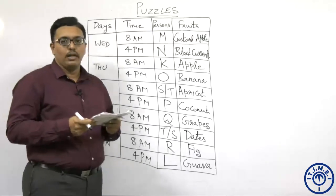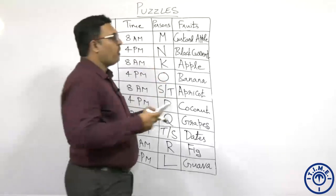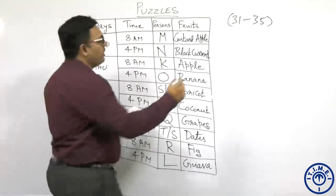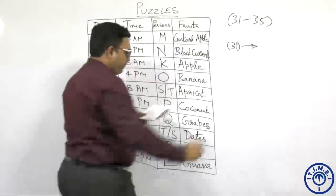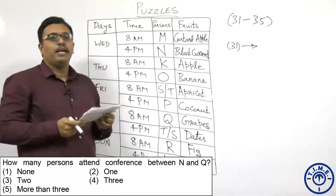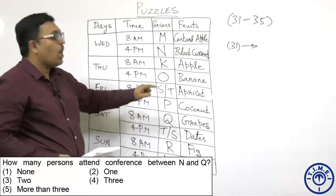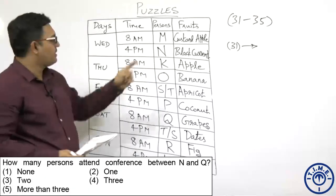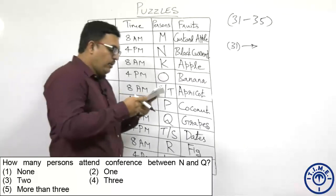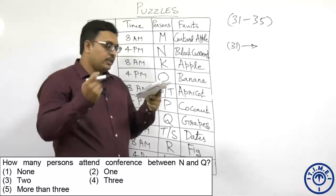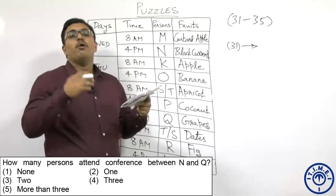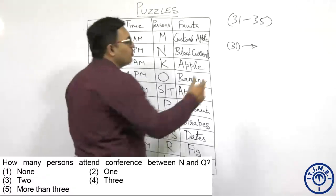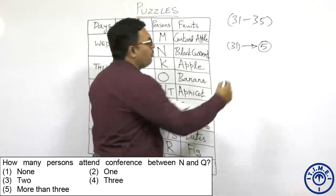Now let us look into the five questions one by one. Questions 31 to 35 are given for this arrangement. Question 31: How many persons attend the conference between N and Q? N is at Wednesday 8AM and Q is at Saturday 8AM. Counting: one, two, three, four — four persons are attending between N and Q. The answer is the fifth option: more than three.